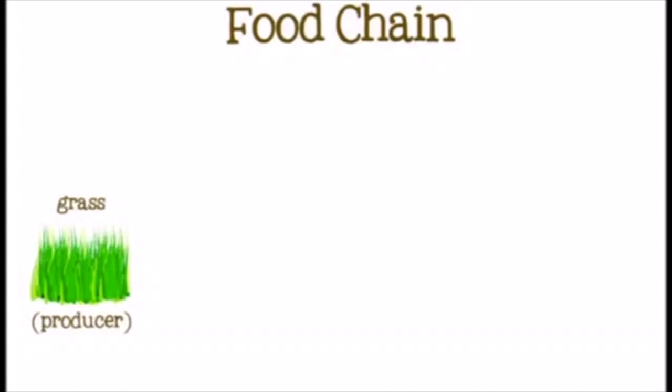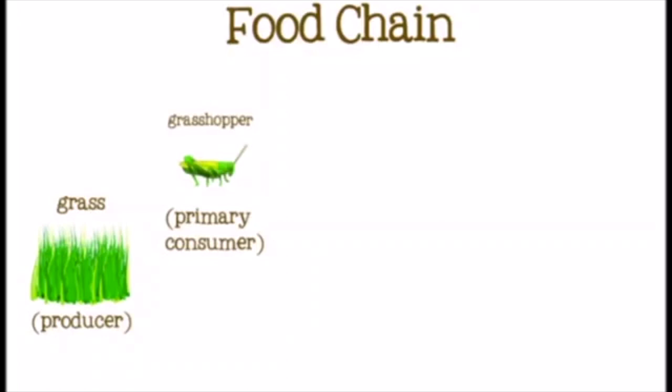Now let's take another example of a food chain. This one starts with grass — the grass is the producer. Then the grasshopper eats the grass, and it's called a herbivore, which means plant eater. Then the blue bird eats the grasshopper, and the bird is a second level consumer.